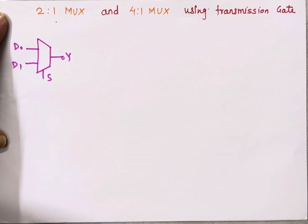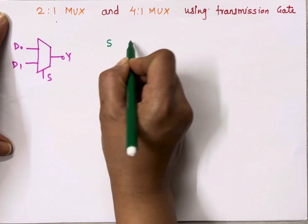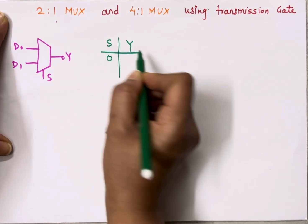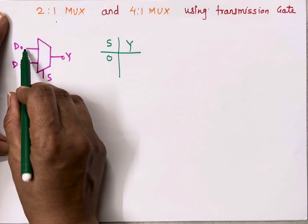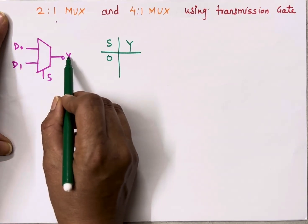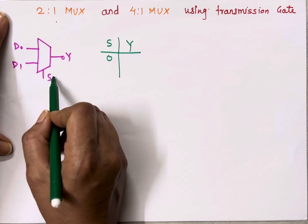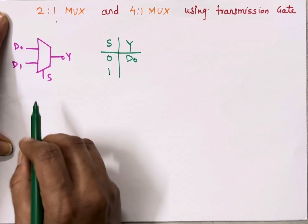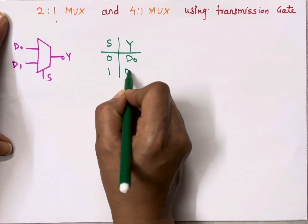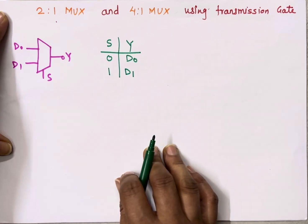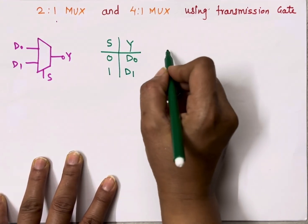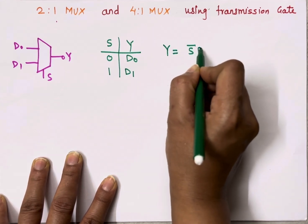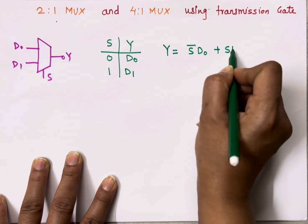The truth table for the 2-to-1 multiplexer: S is the select input, Y is the output. When S equals 0, whichever value is present at D0 — 1 or 0 — it passes that value to the output side, so Y is D0. When S equals 1, it selects D1, so Y equals D1. We can write the equation for output Y as S̄·D0 + S·D1.